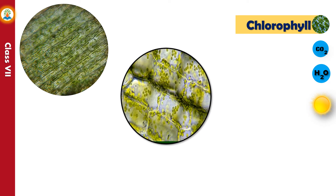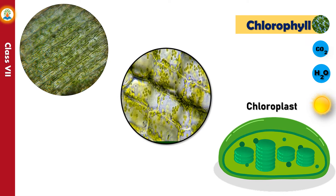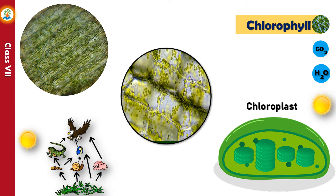Chlorophyll is located in a plant's chloroplasts, which are tiny structures in plant cells — this is where photosynthesis takes place. Chlorophyll's job in a plant is to absorb light, usually sunlight. Food webs in every type of ecosystem, from terrestrial to marine, begin with photosynthesis. Chlorophyll can be considered a foundation for all life on Earth.